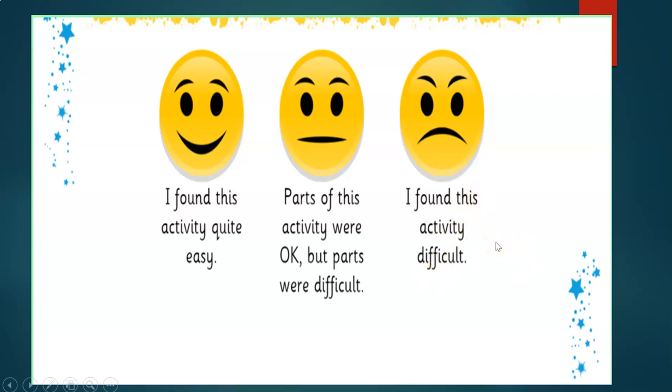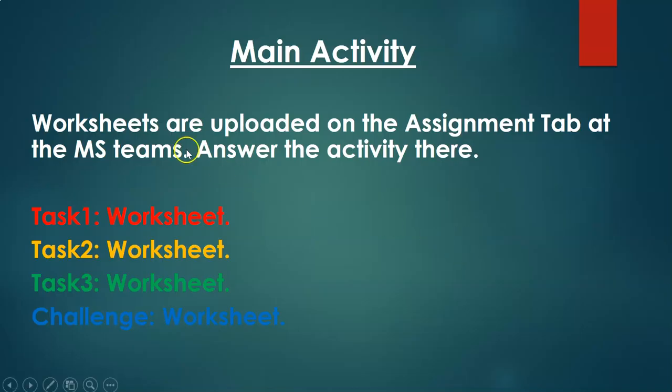Now for the main activity: worksheets are uploaded on the assignment tab in MS Teams. There are three worksheets — Task 1, Task 2, Task 3 — and one challenge worksheet. Choose which task you can do best and work on it in the MS Teams assignment tab. I will leave you with this activity. Thank you so much, enjoy learning, and always remember — be the best you can! Bye!